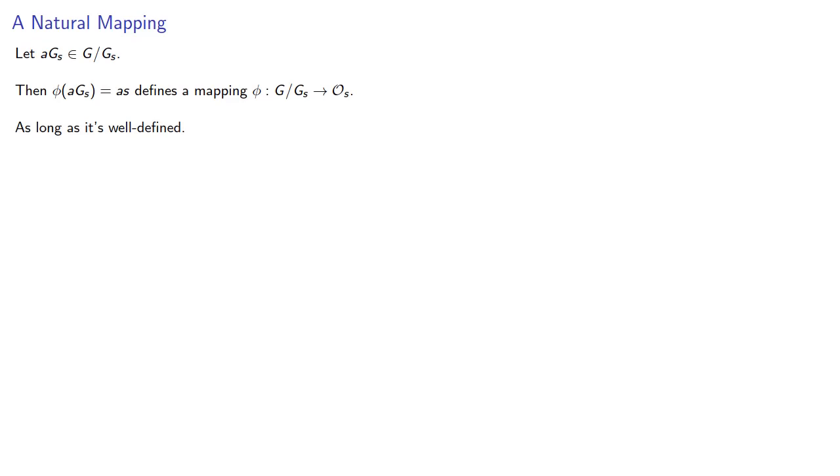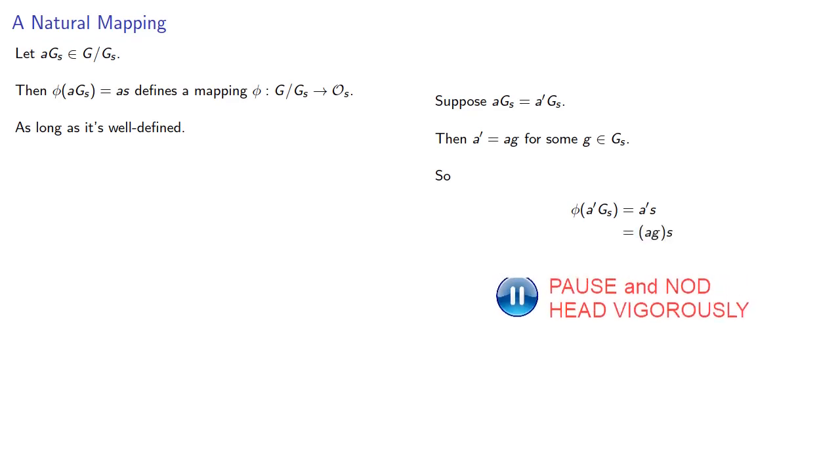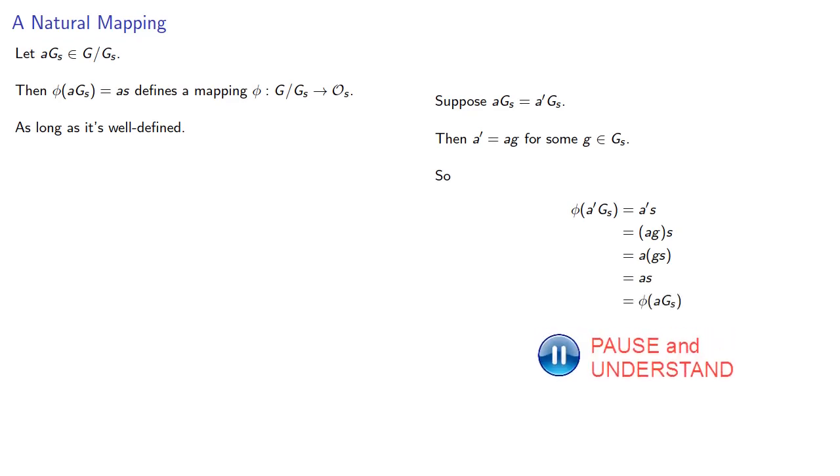Well, it does have to be well defined. So suppose I have two different representatives for the coset. Since the cosets are the same coset, we know that a' has to be equal to ag for some g in our stabilizer. So when we apply Phi to a'G_s, we get a's. Well, that's really ags, which is a applied to gs. But since g is in our stabilizer, gs is just going to be s. And so this is as, which is Phi applied to our coset. And that means that Phi is well defined.